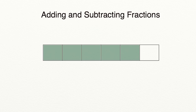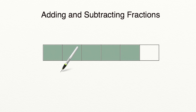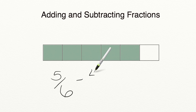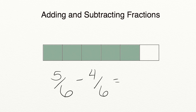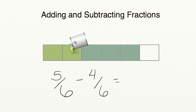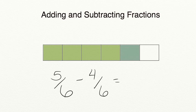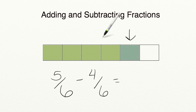Now that we've talked about adding fractions, let's try subtracting fractions. We have one whole on the screen, divided into six parts, with five of these six parts shaded in. If I were to ask you to subtract four-sixths from five-sixths, our first step is to shade in the four-sixths we're going to be subtracting. So from the five-sixths shaded in, we take away one-sixth, two-sixths, three-sixths, four-sixths. That leaves us with one-sixth left over. So five-sixths minus four-sixths leaves one.